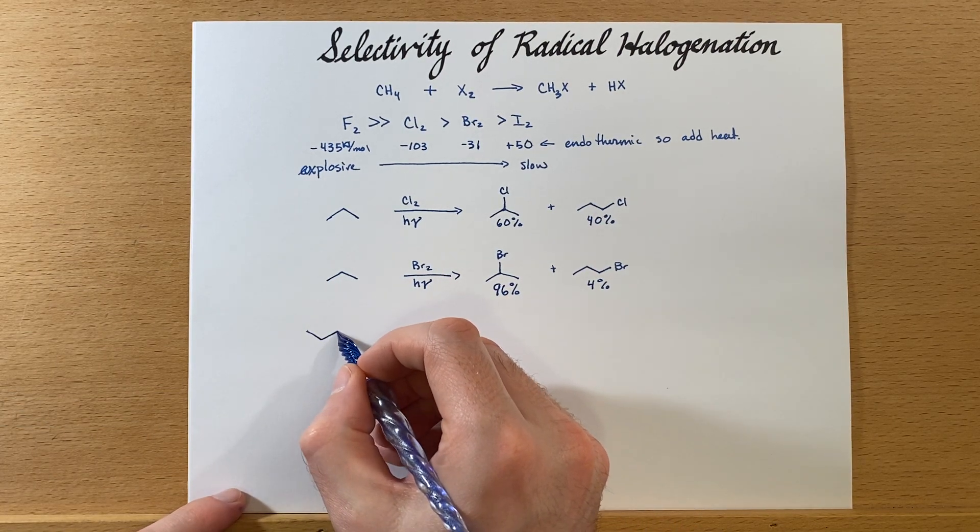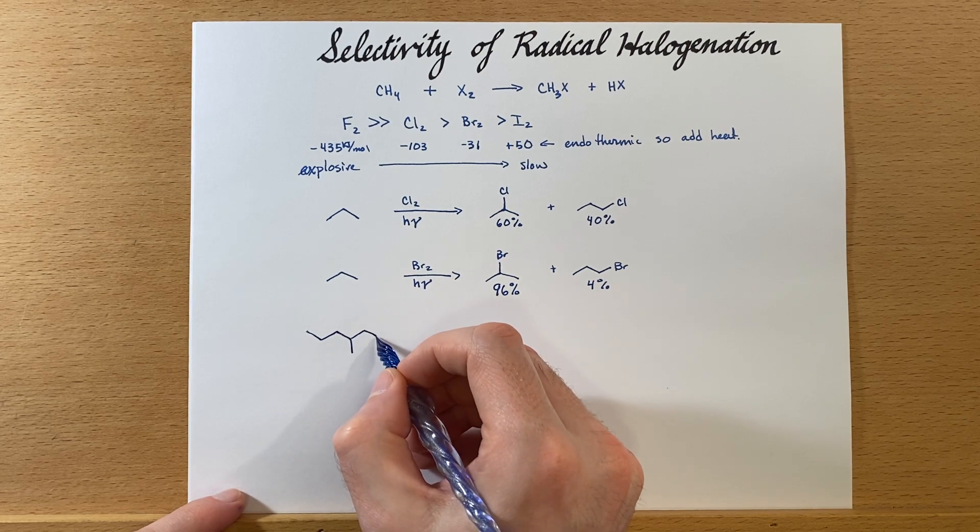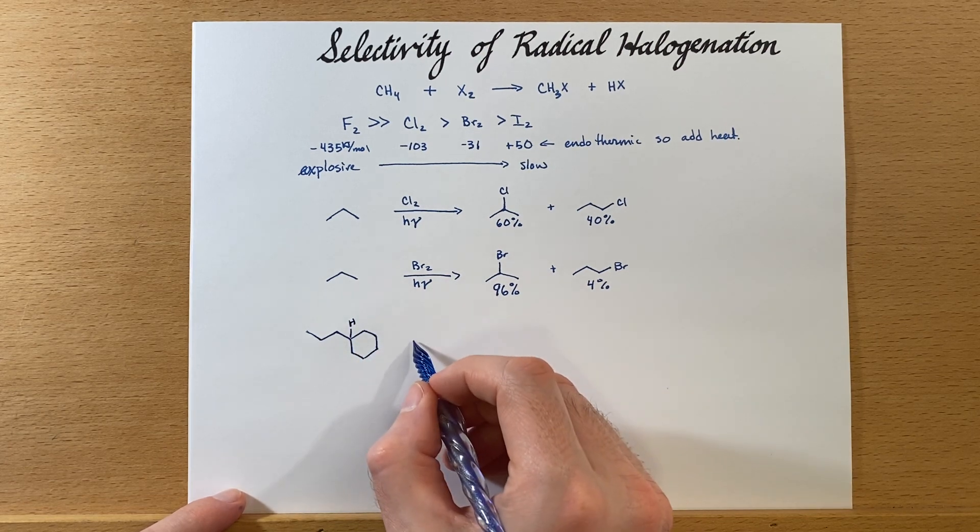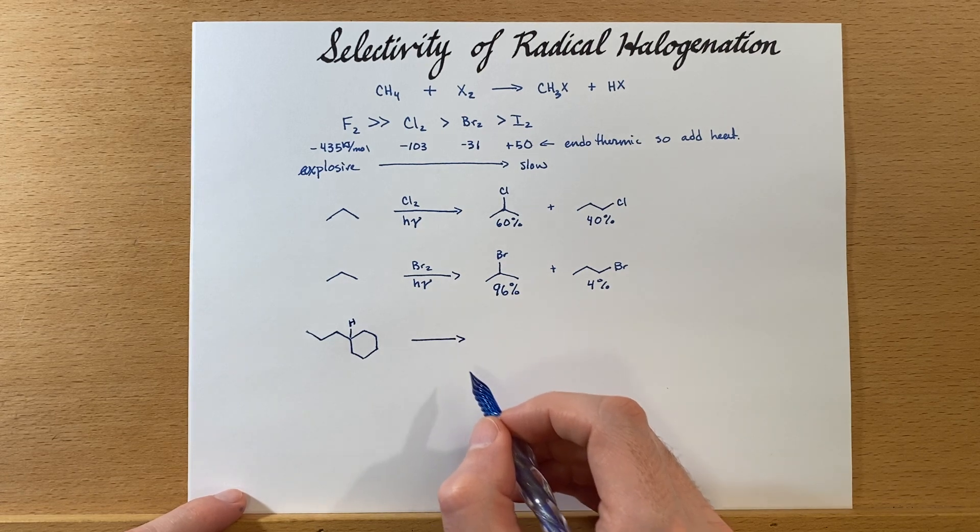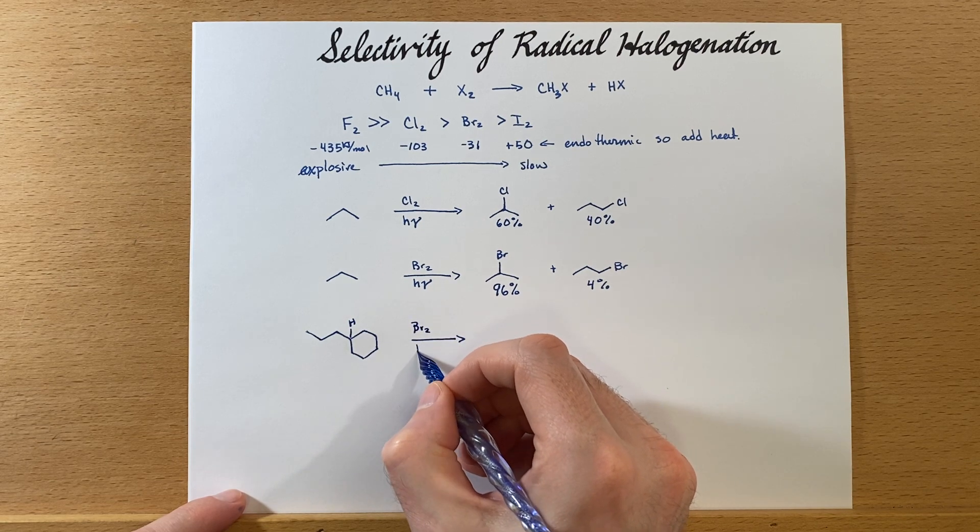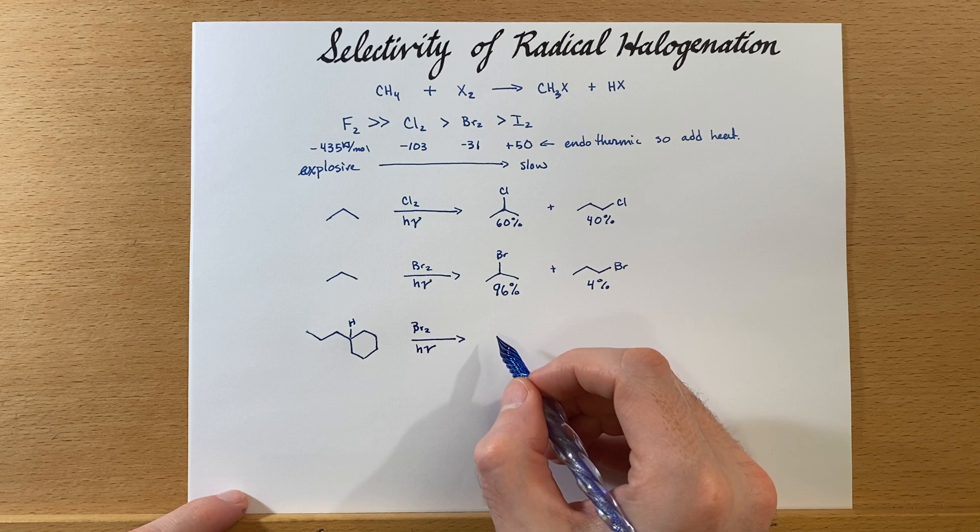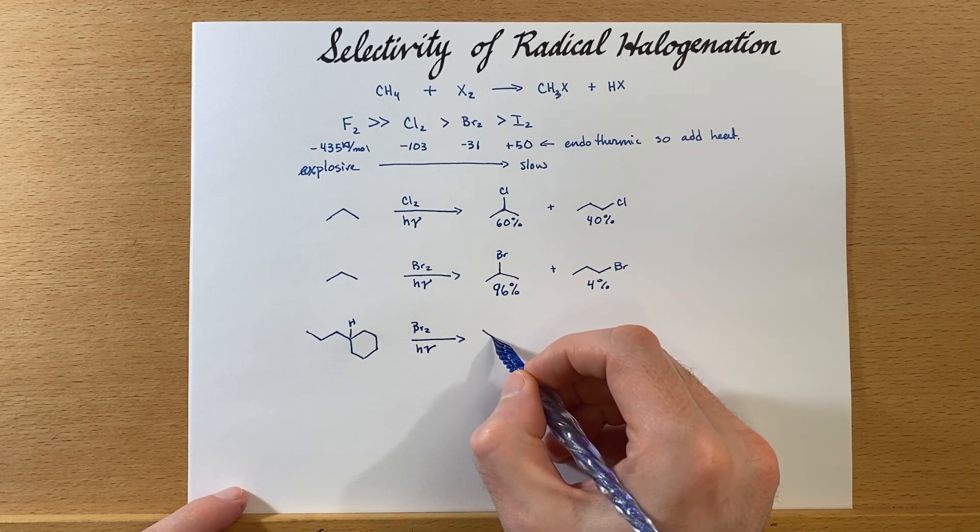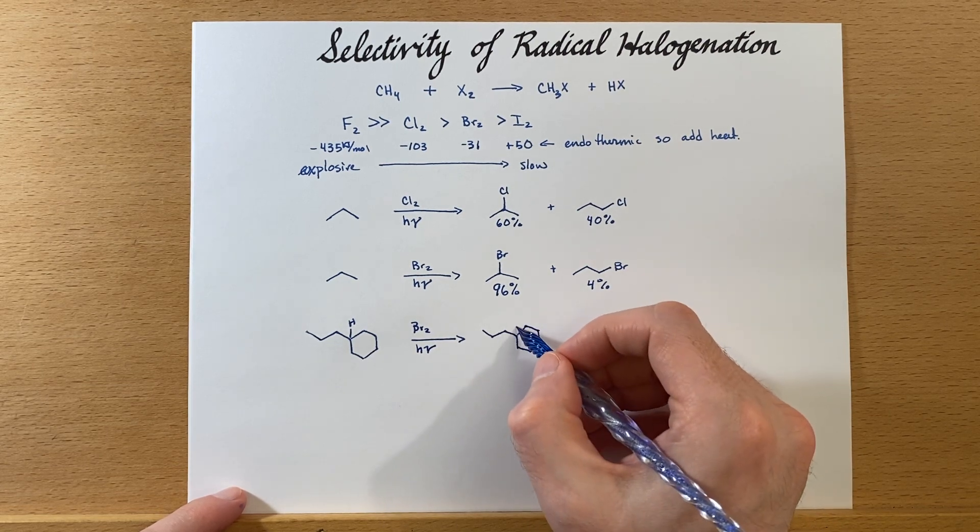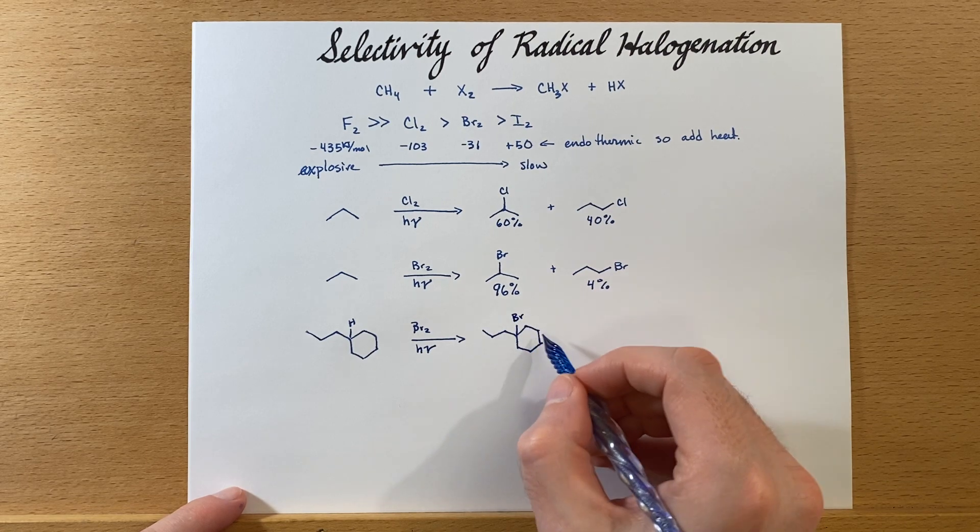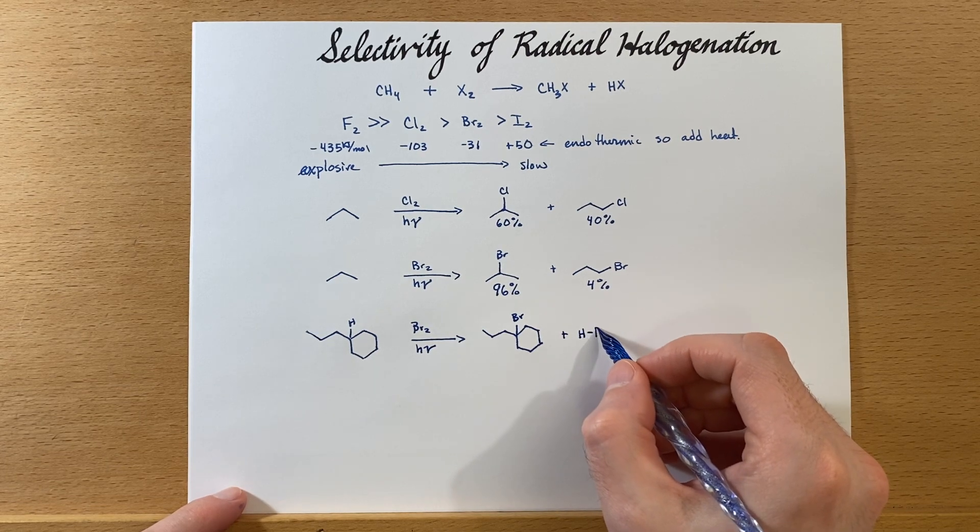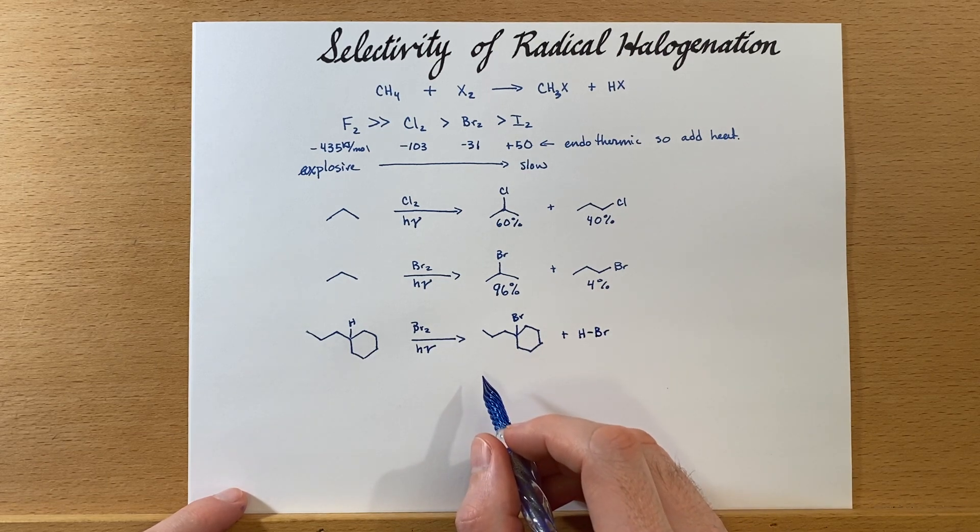When we run this reaction where we have a tertiary carbon where we could substitute, we will nearly get exclusive substitution at that hydrogen. I know that there's a lot of different possibilities for a radical reaction, and once you form the radical, lots of things can happen. But there is still instances where we have control, and that just has to do with how stable the radical is.